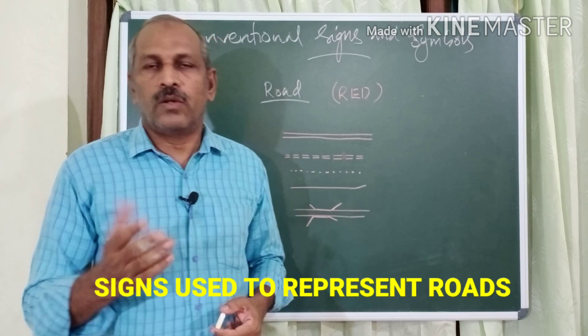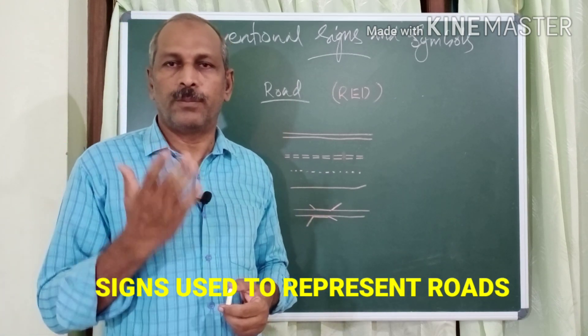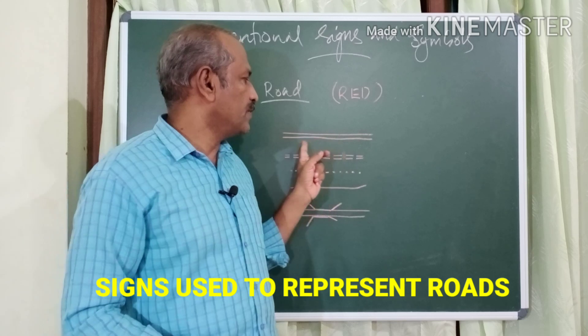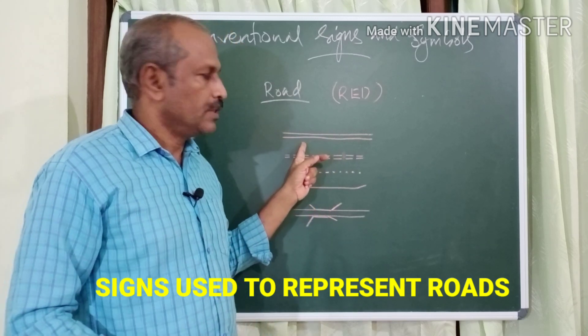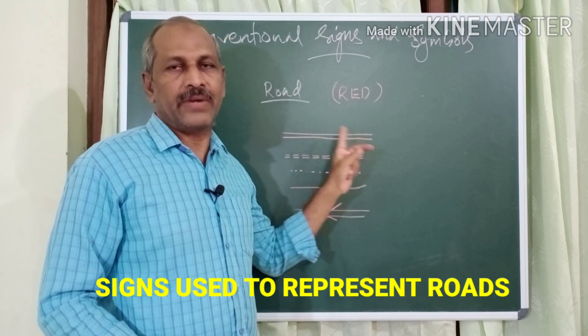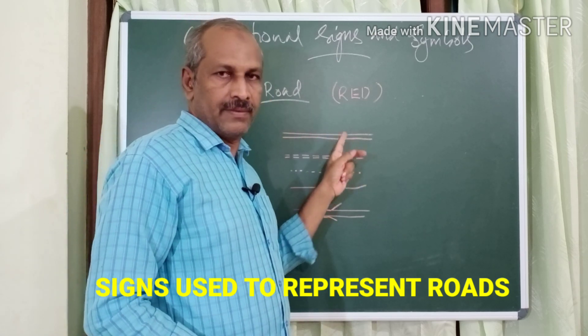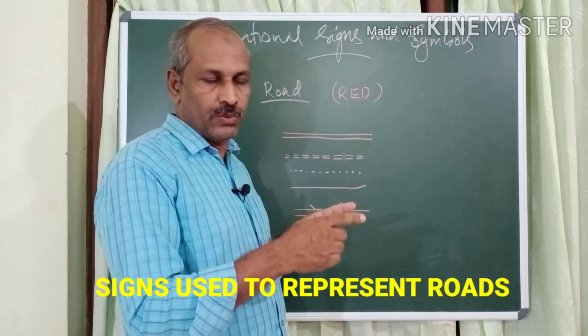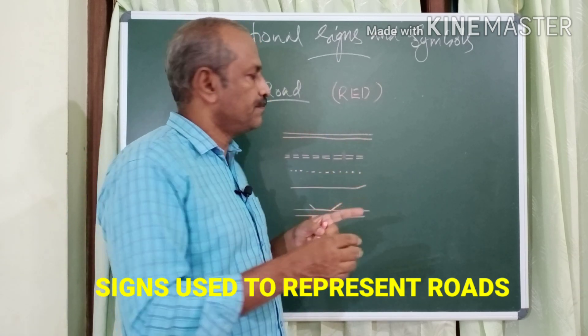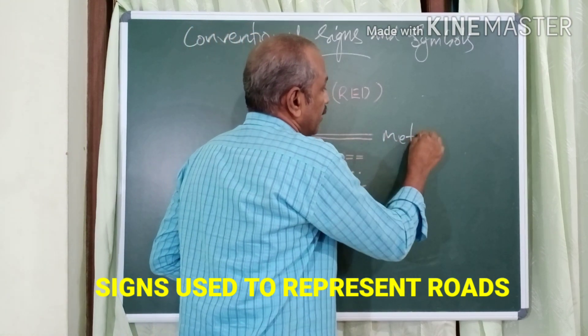Now let us see how roads are represented in the topographic map. Here, two parallel lines in red color — they can be straight or curved — and they represent a metalled road.